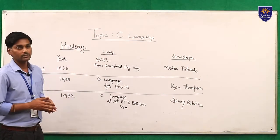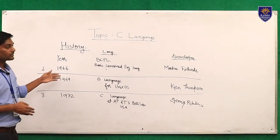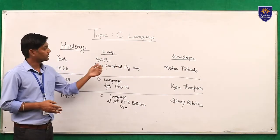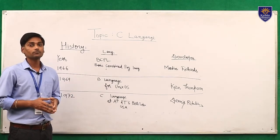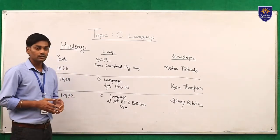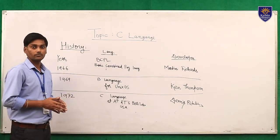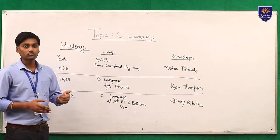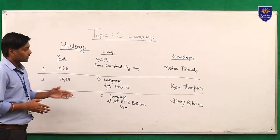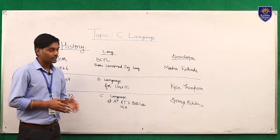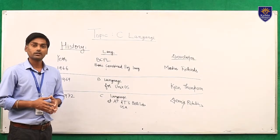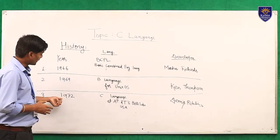Let's see the history of C language. In 1966, Martin Richards developed a programming language called BCPL — Basic Combined Programming Language — developed for operating systems. In 1969, Ken Thompson developed B language, also for Unix OS development. In 1972, Dennis Ritchie developed C language at AT&T Bell Labs, USA, and was also a co-developer of the Unix operating system.